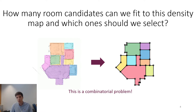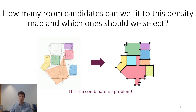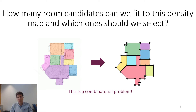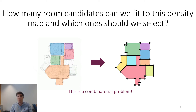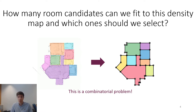We wonder if we can pose floor plan estimation as a combinatorial problem. Having many proposed rooms in mind that potentially fit the input density map, what is the best subset we should select? All rooms must fit together, and their shapes can be optimized jointly to improve the fit. Complexity grows rapidly as the number of proposed rooms increases, which is a big issue especially when we consider the aspect of potential optimization.